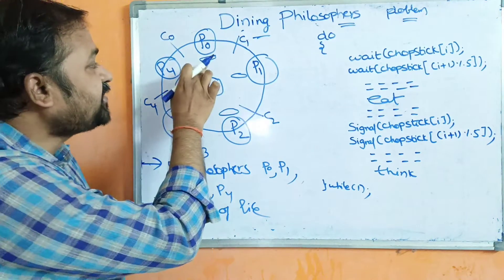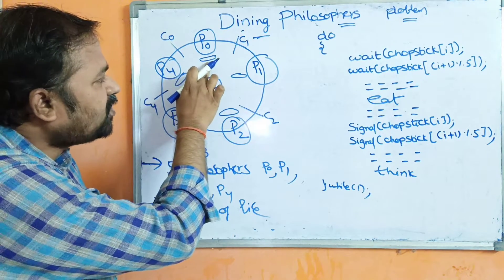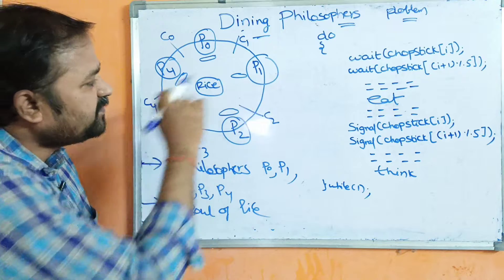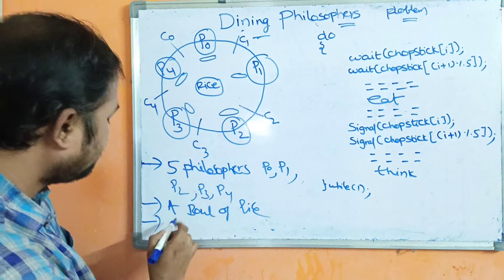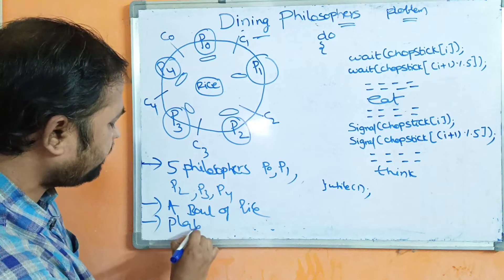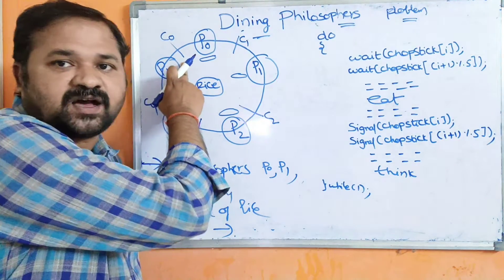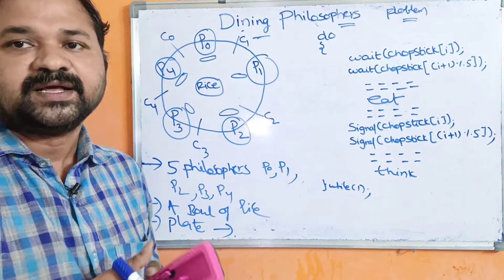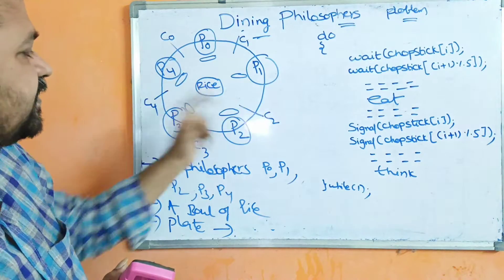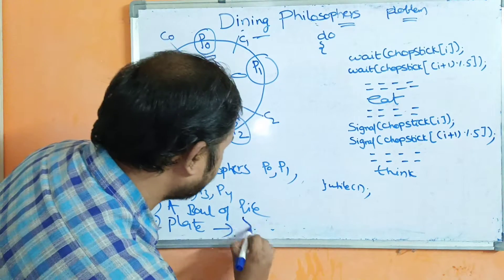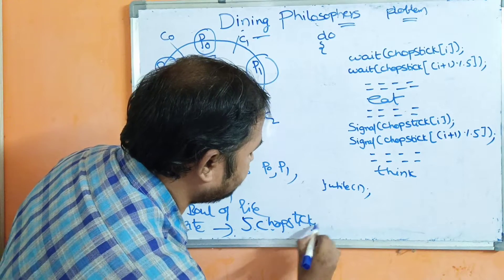In front of each philosopher, a plate is there — in front of P0, P1, P2, P3, and P4 we have a plate. And here, five chopsticks are there. A chopstick is nothing but a fork. We are representing chopsticks with the help of C0, C1, C2, C3, C4. So, five chopsticks or forks are there.